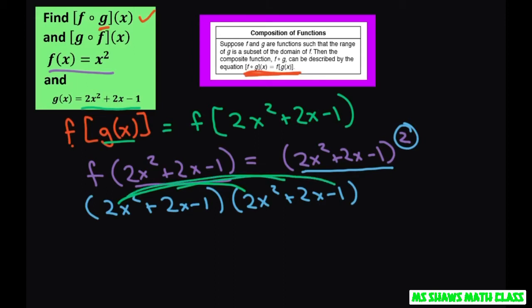That's going to give you 4x to the fourth plus 2x cubed minus 2x squared. Now go to this one and multiply 2x squared.